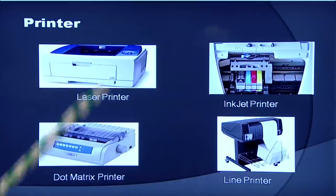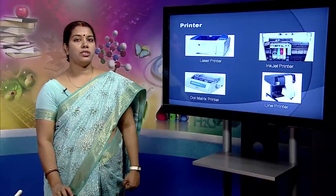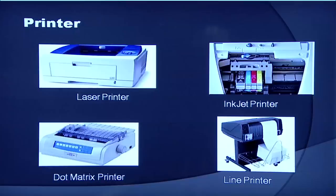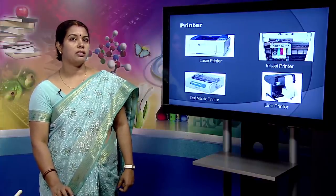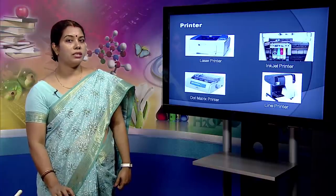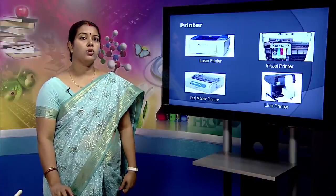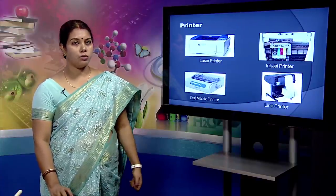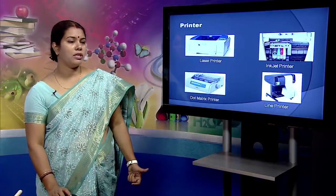The laser printer produces high quality print normally found in publishing. It is extremely fast and quiet, with automatic paper loading and no smudging of ink ribbons. The fastest laser printer can print up to 200 pages per minute in monochrome and up to 100 pages per minute in color. An inkjet printer is like a laser printer but uses ink cartridges. It creates an image directly on paper by spraying ink through as many as 64 tiny nozzles, and although not quite as sharp as a laser printer, the quality of inkjet images is still high.